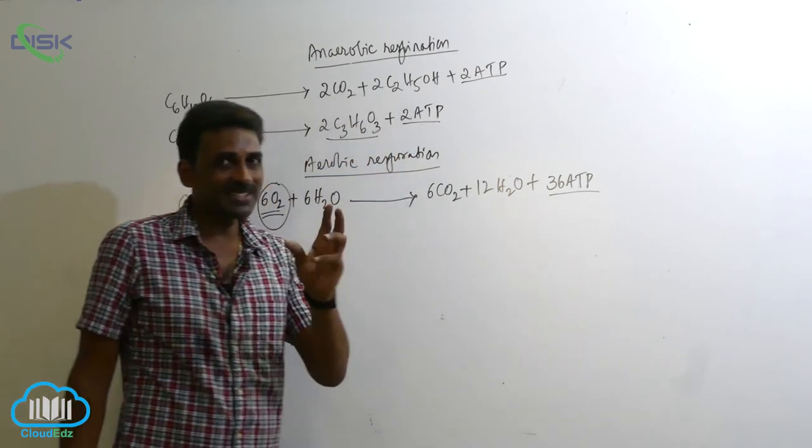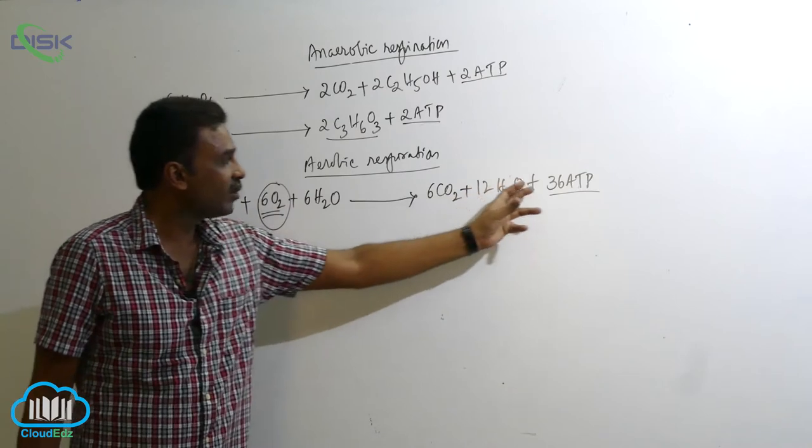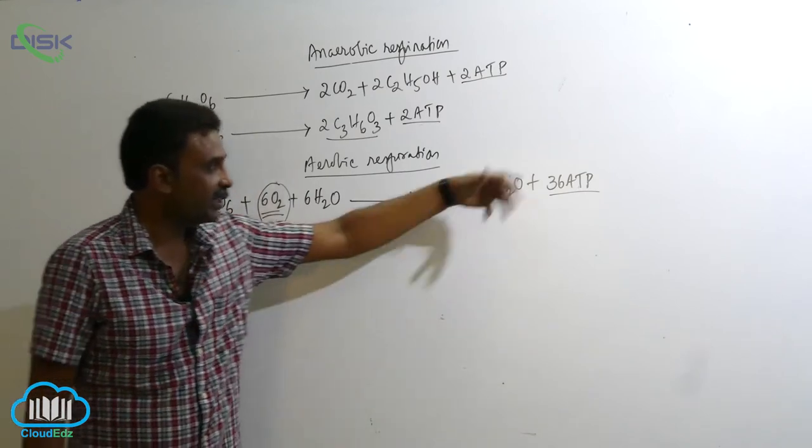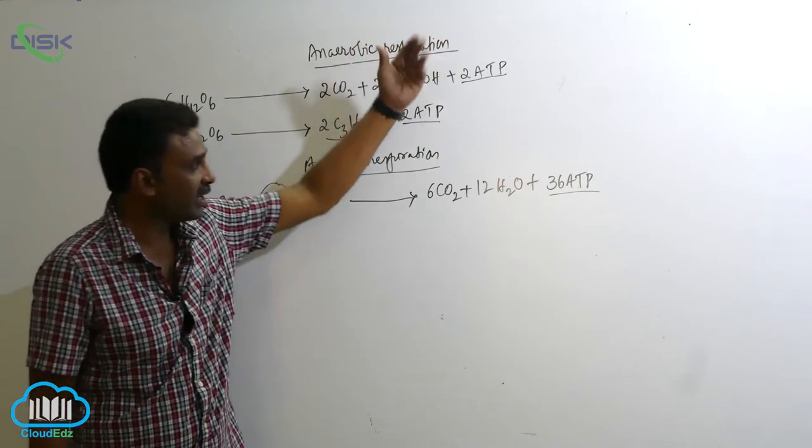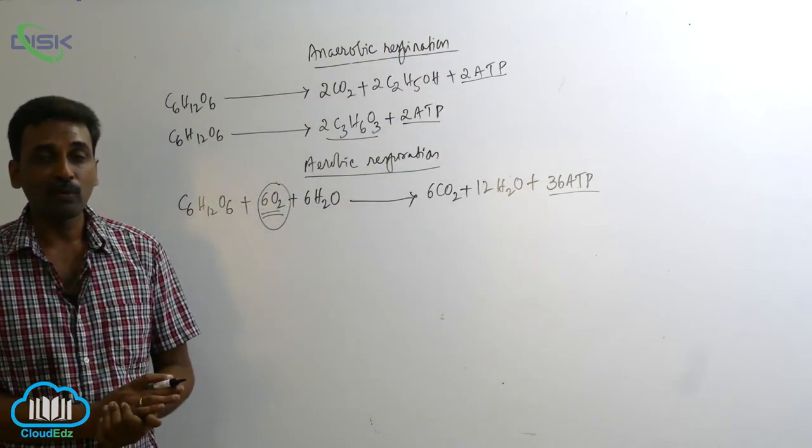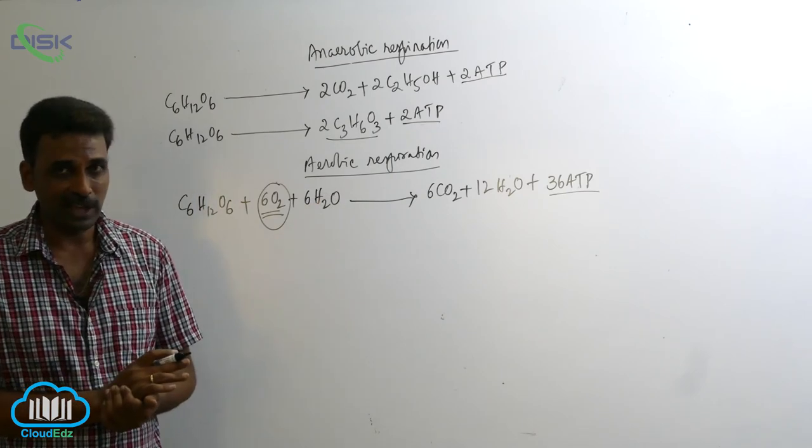a lot of energy—36 ATP molecules are synthesized. So glucose is broken down into carbon dioxide and water. In that process a huge amount of energy is produced—several times more ATP is synthesized in aerobic respiration compared to anaerobic.